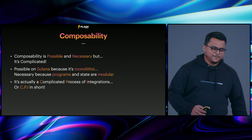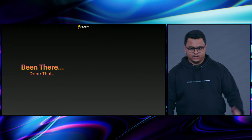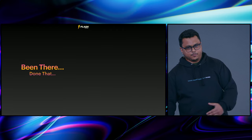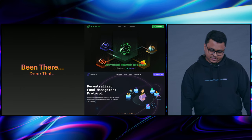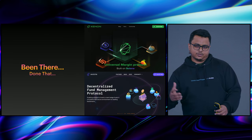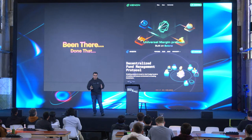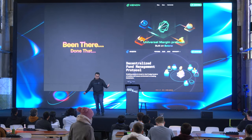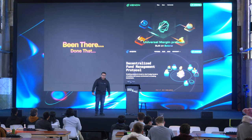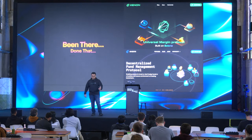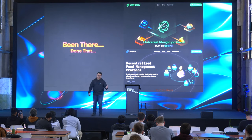We know composability is complicated because we've worked on it and been there since early 2021, composing over Raydium and Orca. We built the fund management protocol and one of our best products was market making funds for Mango, where market makers could pool funds together and market make on Mango as if they were using their own wallets. We've had great traction — more than $100 million worth of volume on Mango through our funds. We had DOVs on Friktion, a swap engine routing through Jupiter. Jupiter is an epitome of composability, composing over all the DEXs, and we composed over them as a swap engine. We know composability to the core.